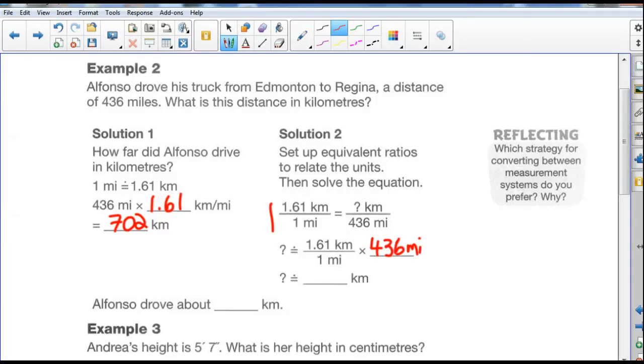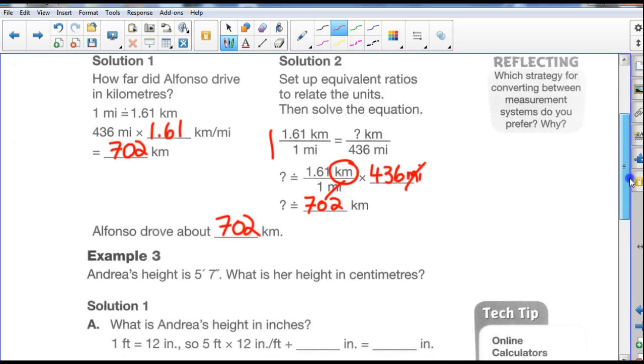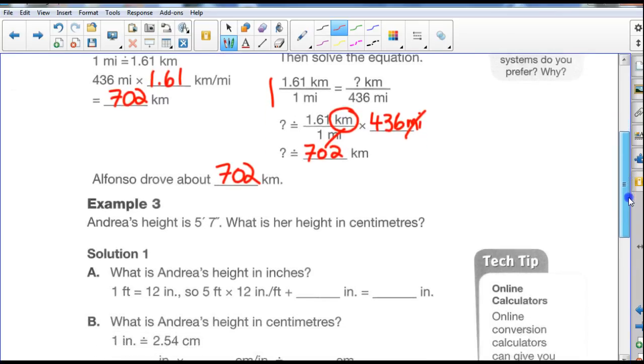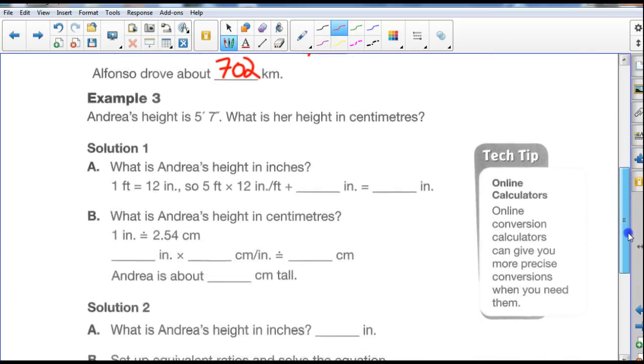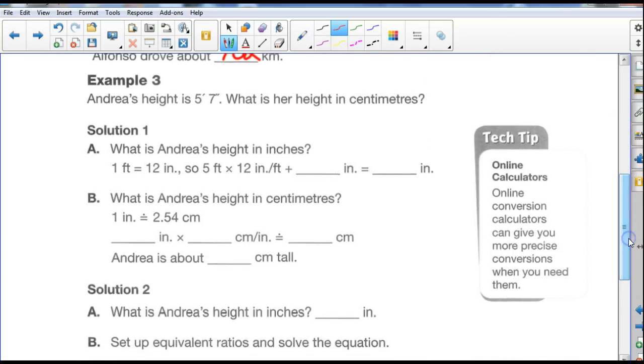And by cross-multiplying, we just put 436 miles right here. Now, when you've got the same unit on the top and the same unit on the bottom, you can cancel them out because they equate to 1, so I can cross out miles there. The only unit I'm left with is a kilometer, so I just take 1.61, multiply it by 436, and I end up with the same answer, 702 kilometers. So Alfonso drove about 702 kilometers. Which strategy do you prefer? Well, it's just a matter of preference. How you get to the right answer doesn't really matter as long as you get to the right answer.